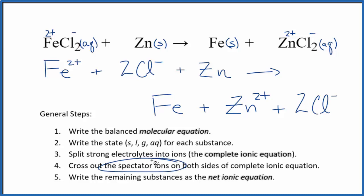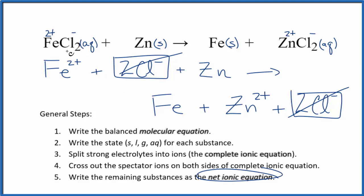Now we can cross out the spectator ions. They're on both sides. So I have my reactants and my products. The only thing that's the same are these two chloride ions right here. These are spectator ions, and we can cross these spectator ions out. And that gives us the net ionic equation for FeCl2 plus Zn.